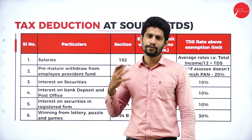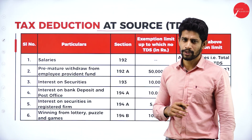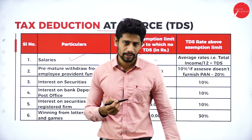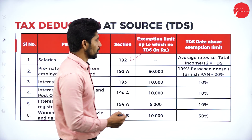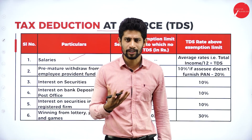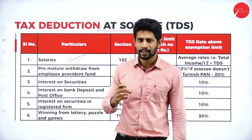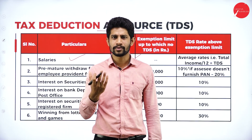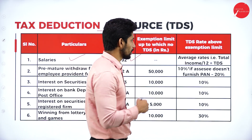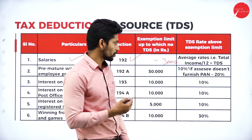Now we will look at which kinds of incomes are subject to TDS and at what rates. For salaries, it comes under section 192. There is no exemption limit; the formula is total income divided by 12 months equals TDS per month. For example, if your salary is 30,000 rupees, 10 percent TDS means 3,000 rupees is deducted every month from your salary account.